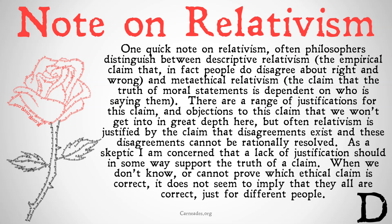One quick note on relativism: philosophers often distinguish between descriptive relativism — the empirical claim that people do in fact disagree about right and wrong — and meta-ethical relativism, which is the claim that the truth of a moral statement depends on who is saying it. Relativism is often justified by the claim that disagreements exist and can't be rationally resolved. As a skeptic, I'm concerned that a lack of justification should support the truth of a claim; not knowing what's right doesn't imply that everything is right for different people.